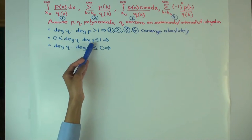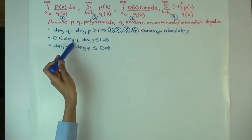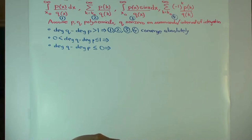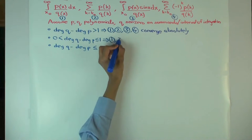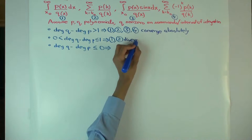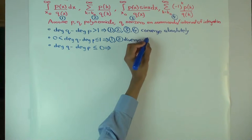The next case: the degree difference is at most 1 but strictly bigger than 0. Since we're dealing with integers, this means the degree difference equals exactly 1. In this case, types 1 and 2 diverge, while types 3 and 4 converge — but they converge conditionally.